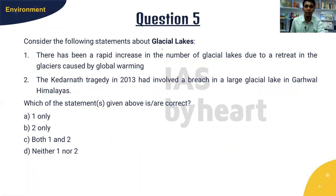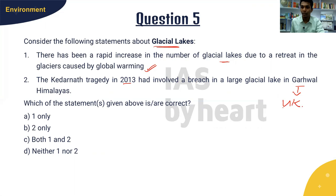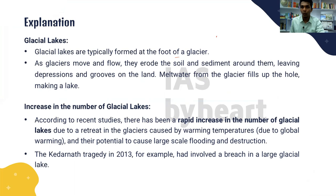Question five is about glacial lakes. There has been a rapid increase in the number of glacial lakes due to the retreat of glaciers caused by global warming — that is true. The Kedarnath tragedy in 2013 involved the breach of a large glacial lake in the Garhwal Himalayas in Uttarakhand — that is also true. The answer is both one and two, option C. Glacial lakes are typically formed at the foot of a glacier as temperatures increase and the glacier melts.